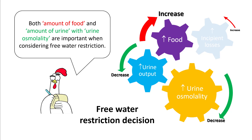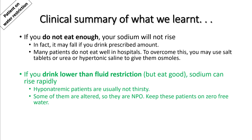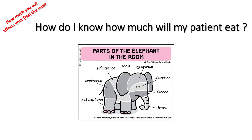For free water restriction decisions, you must look at insensible losses, food, urine output, and urine osmolality. Food and insensible losses increase the free water restriction margin, while increasing urine output and urine osmolality require you to decrease free water intake. If patients don't eat enough, sodium will not rise — it may fall. Many patients do not eat well in the hospital; to overcome this, you can use salt tablets, urea, or hypertonic saline to provide osmoles. Hyponatremic patients are usually not thirsty, so they may not drink enough. If NPO, keep them on zero free water — any water they drink will dilute them further. If urine osmolality improves, sodium will be even higher.